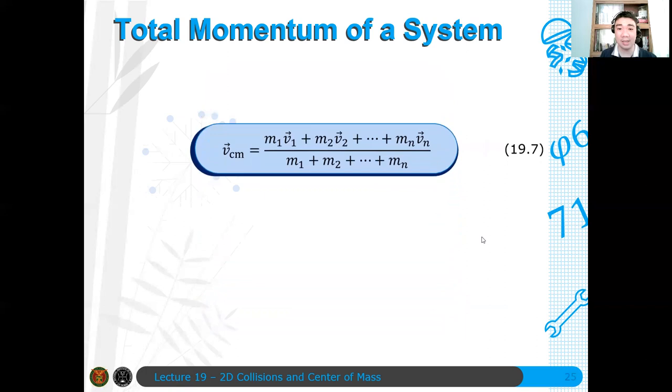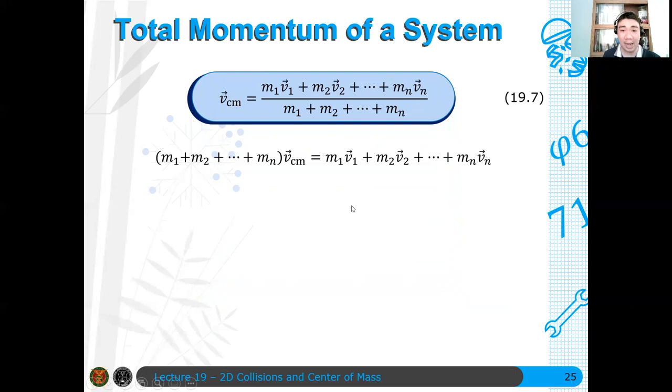Now, as I said, momentum yan yung nasa numerator. So pwede mong isipin na total momentum lang siya. Ngayon, ang mangyayari, I factor out, I multiply both sides by M, by this, the denominator. So yung denominator, mapupunta siya dito, mapupunta siya ngayon dito, which is equal to the individual momentum of the system, individual momentum of each particle. So, therefore,